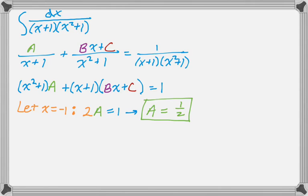So let's think. The next easiest number to plug in is probably 0, because it's going to make B go away. So if I let x equal 0, I end up with 0 plus 1 is 1 times A, so just 1 half, and then plus